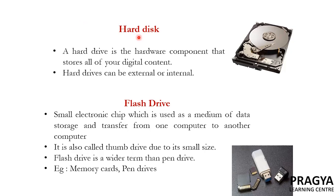Hard disk is where we store all our digital content. When we buy a computer, we say that it is of 500 GB or 1 TB, etc. — this refers to the hard disk storage capacity. Hard disk can be either external or internal. We also have flash drives, another type of secondary memory. All our pen drives, memory cards, etc. come under flash drive. It is a small electronic chip used as a medium of data storage and also used to transfer data from one computer to another. Due to its very small size, it is often called a thumb drive.